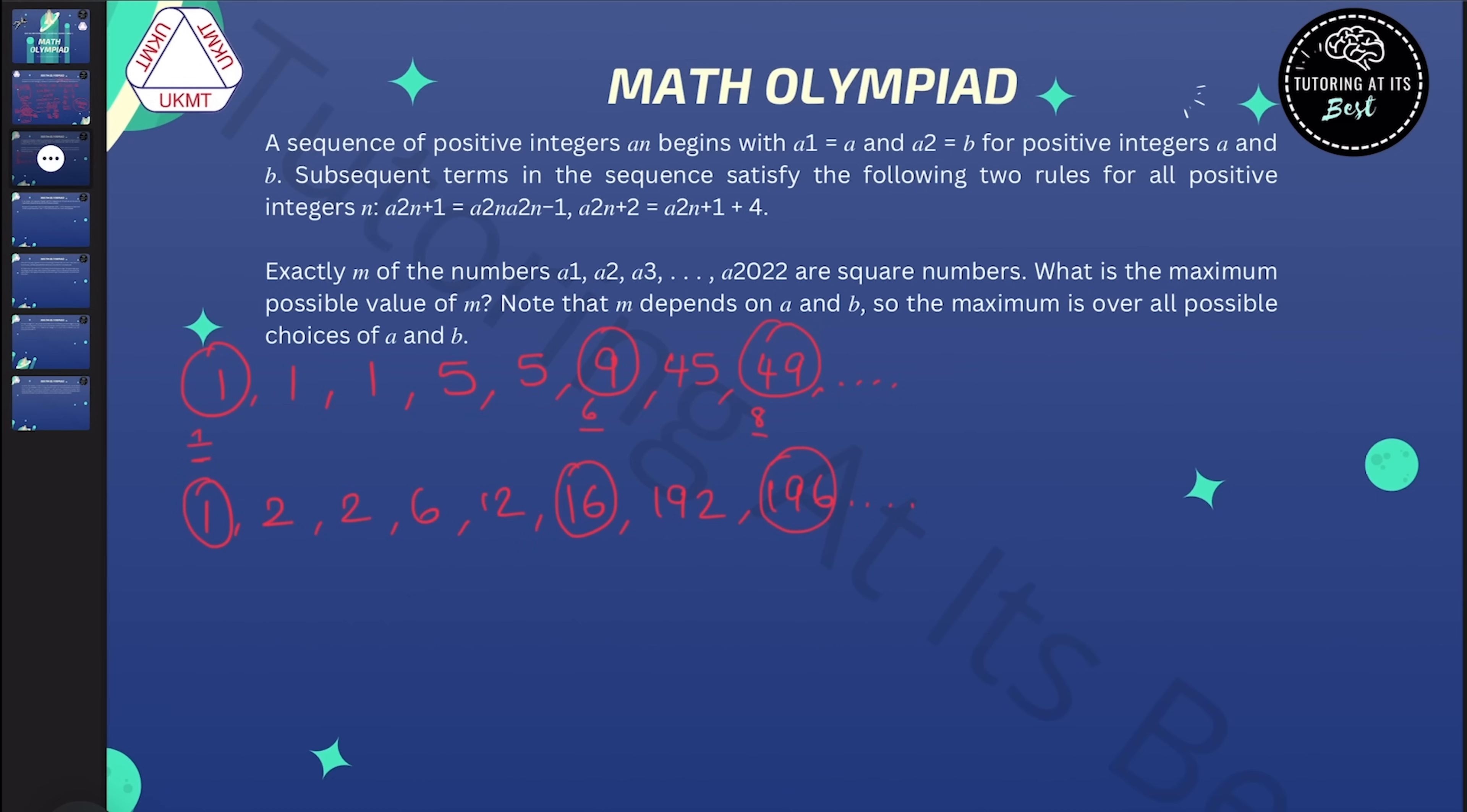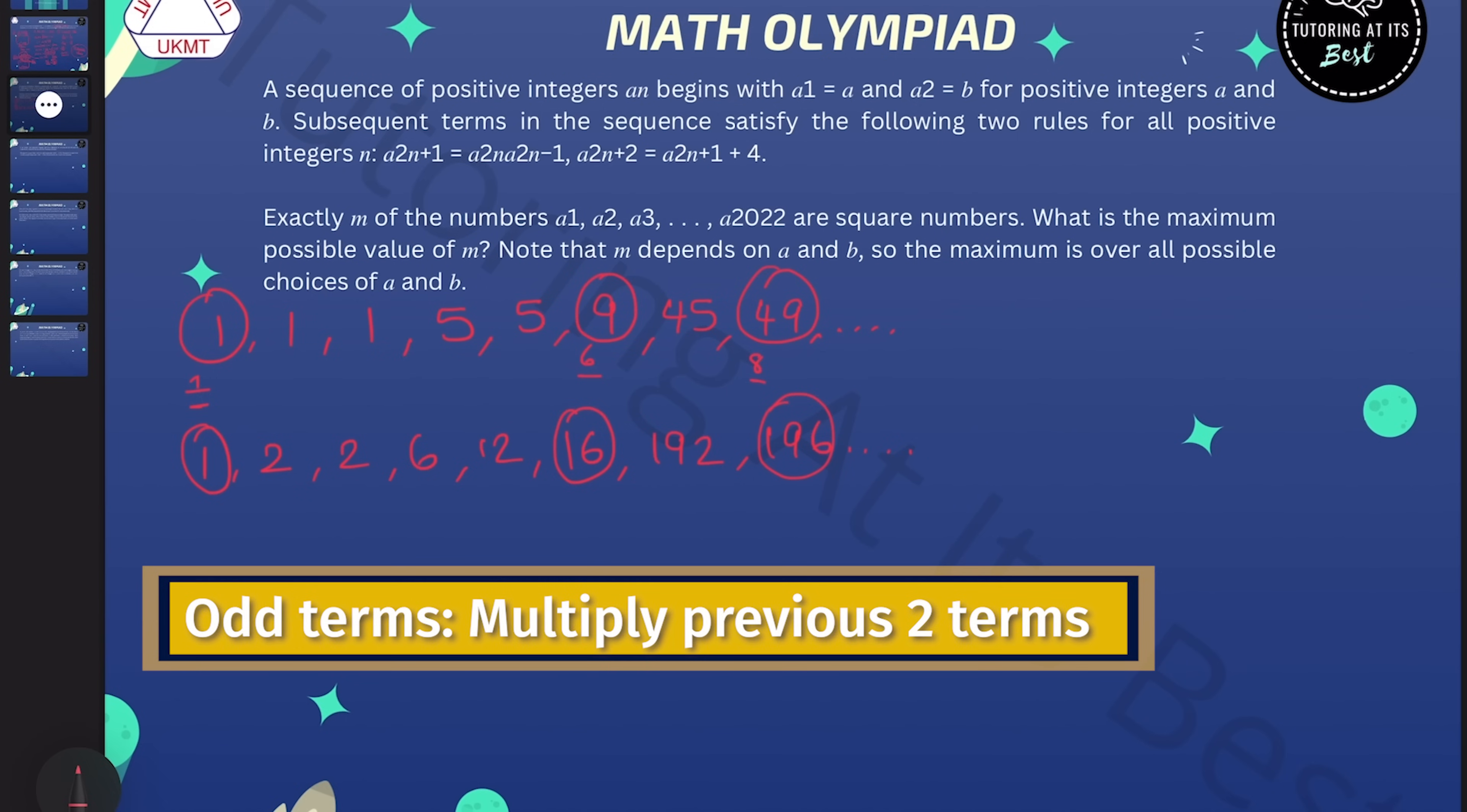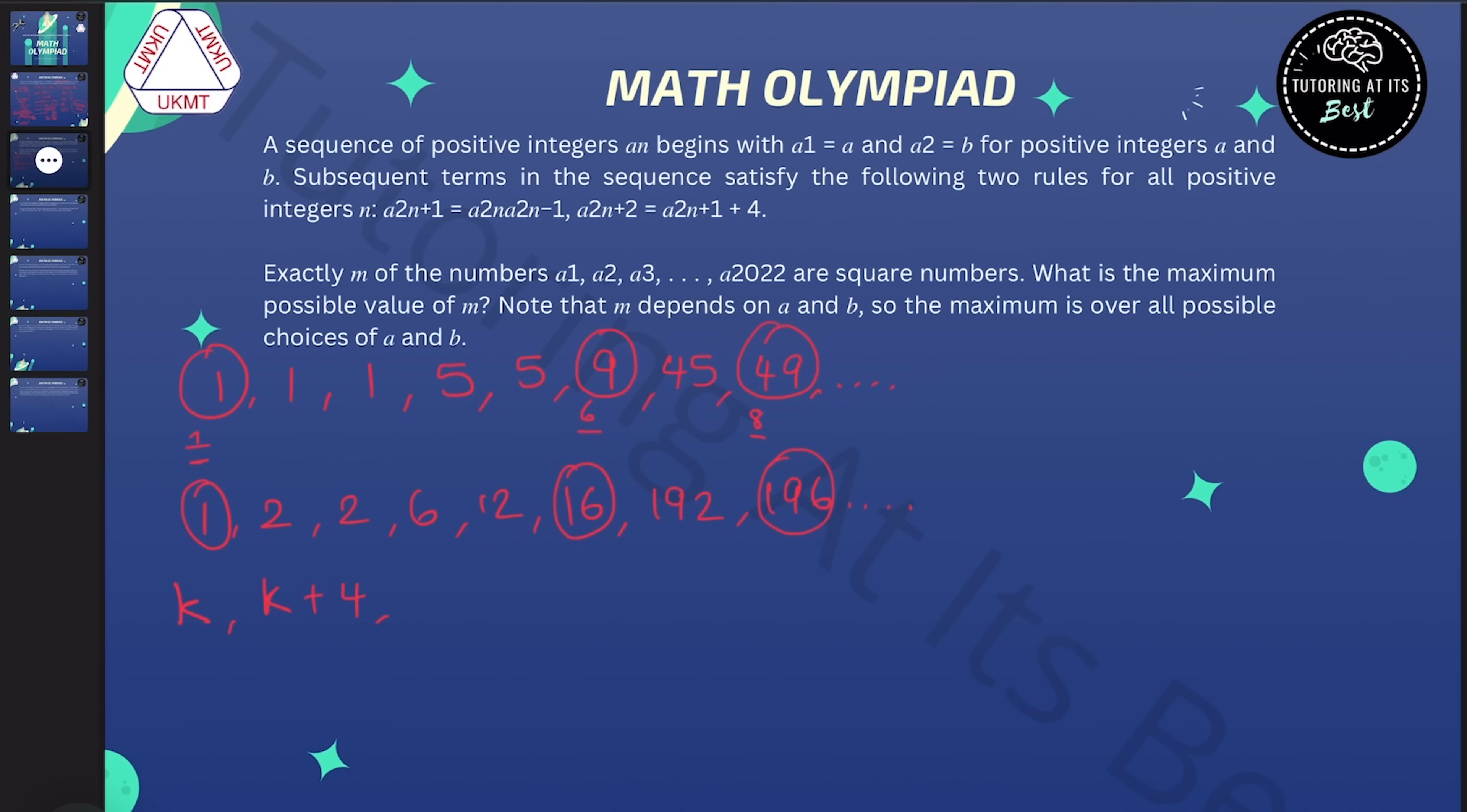So if I'm going to prove that the sixth term is a square, it's helpful to start thinking about the third and the fourth term. The third term is found by multiplying a and b. So let's use k to represent it. So the fourth term is obtained by taking that value and then adding 4 to it. And then the fifth term is obtained by multiplying those two together, so I get k times k plus 4. And the sixth term is obtained by adding 4 to that, so you get k times k plus 4 plus 4.